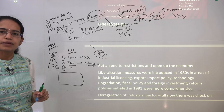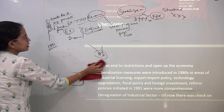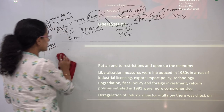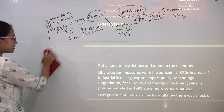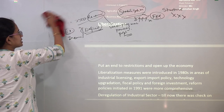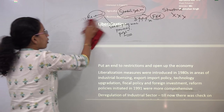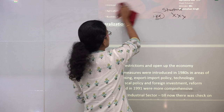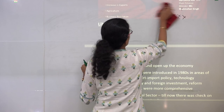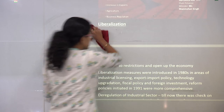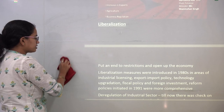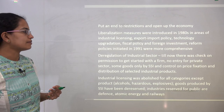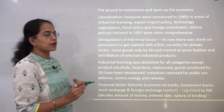Coming to LPG — liberalization, privatization, and globalization — under liberalization the idea was to liberalize the Indian economy. Trade restrictions were removed, banking was slowly opened up for the private sector. You had more foreign direct investment coming in with more than 50 percent stake in the banking sector, more inflow in terms of mutual funds, private sector banks, and more industrial products allowed into India.